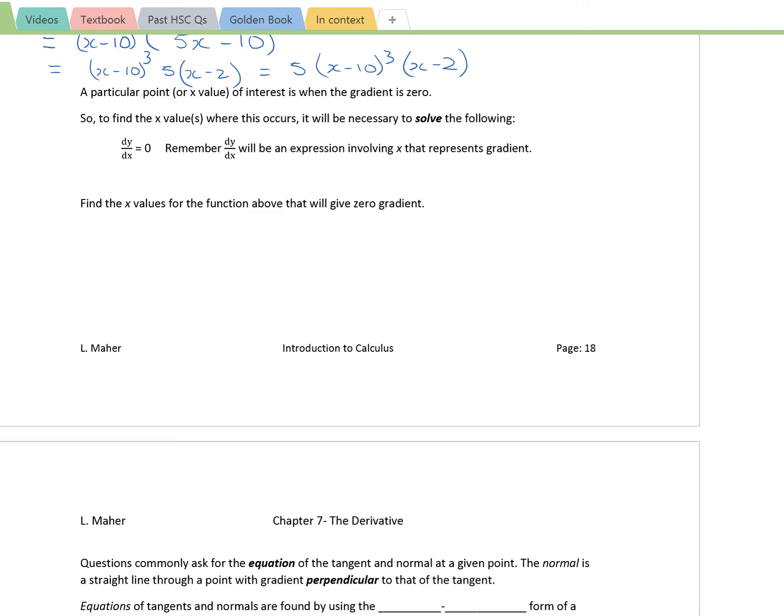Normals stay the same. There's still a straight line perpendicular to a tangent through the point of contact, and you'll still be asked to get the equation, possibly, of a normal.